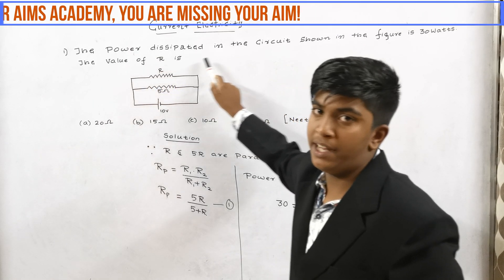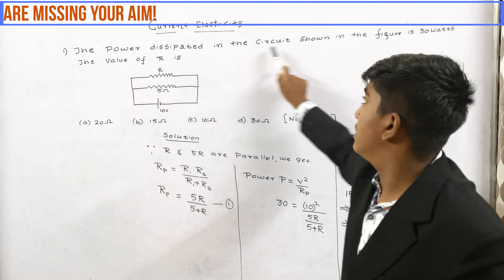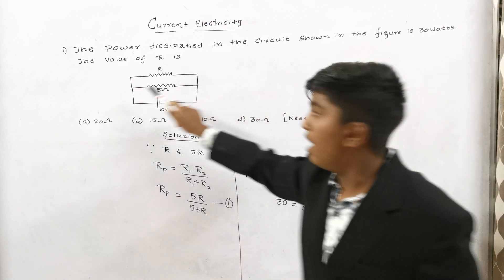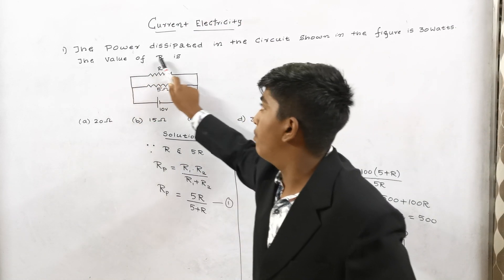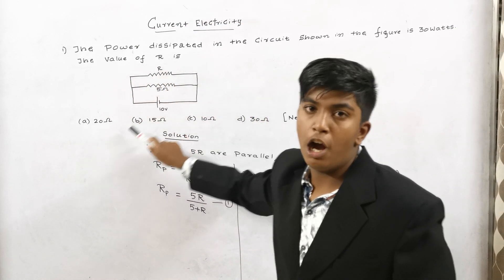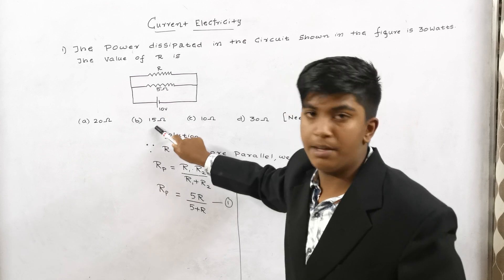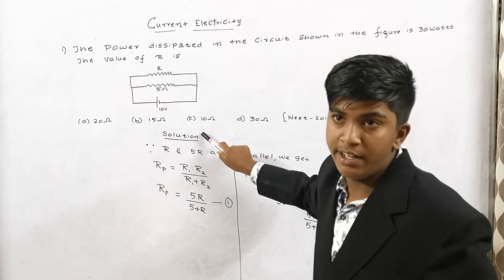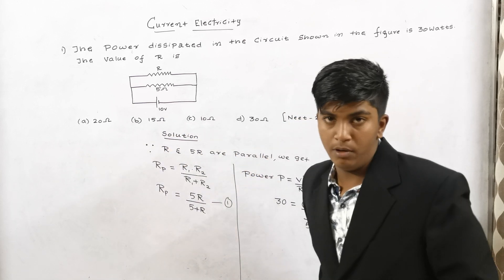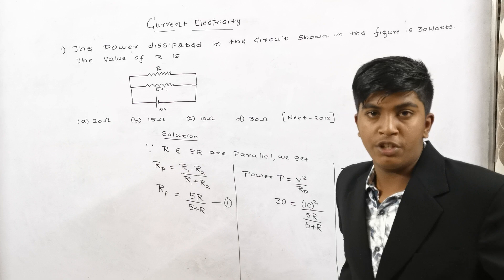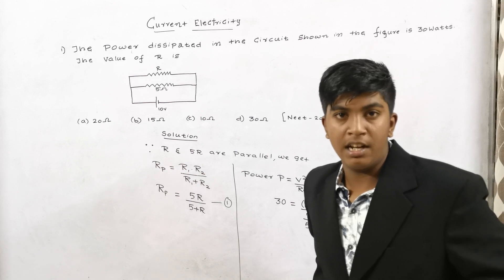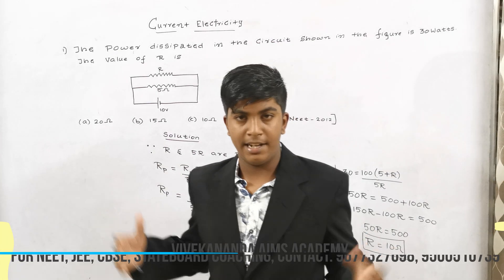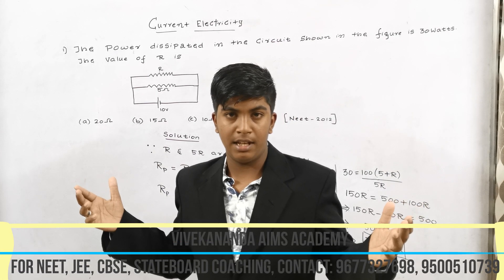The power dissipated in the circuit shown in the figure is 30 watts. The value of R is: option A, 20 ohms; option B, 15 ohms; option C, 10 ohms; option D, 30 ohms. This question has been asked in NIC 2012. Let us go for the solution.